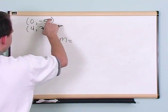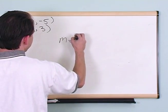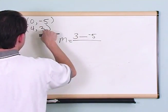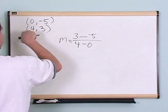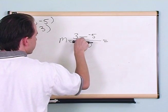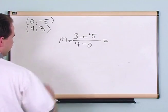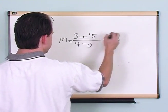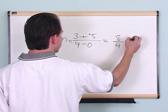I'm going to say 3 minus negative 5, over 4 minus 0 — going the same direction on both. Anytime you have minus a negative number, it's like adding the opposite, so 3 plus 5 is 8, and 4 minus 0 is 4. So the slope is 8 over 4, which equals 2.